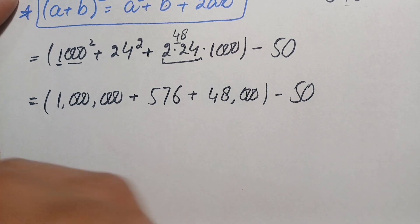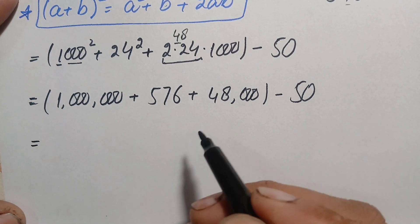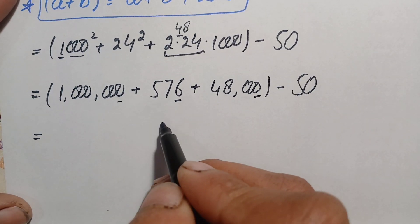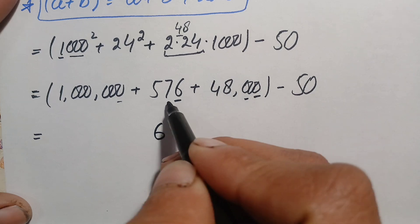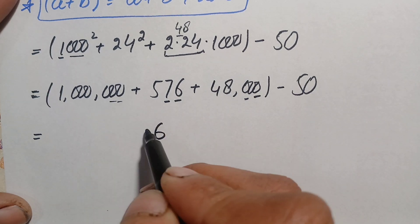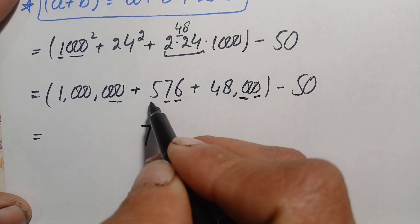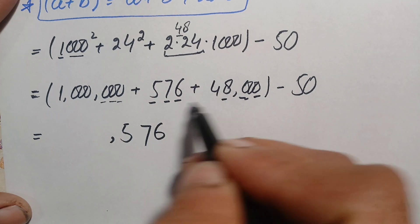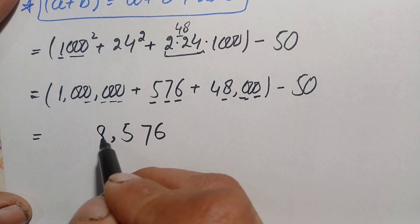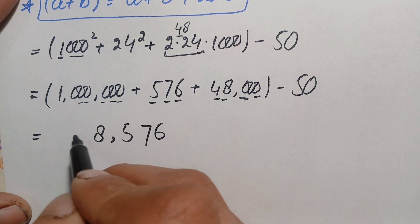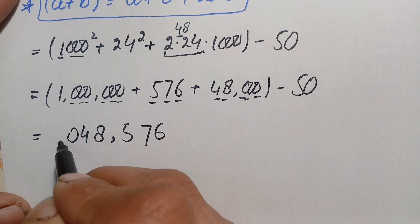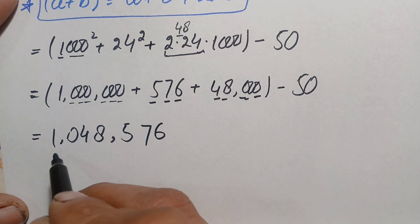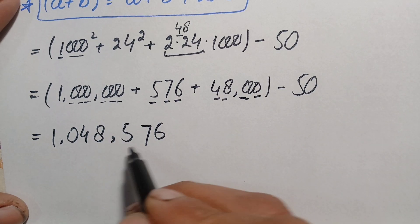We add the three numbers together, starting from the ones position. 0 plus 6 plus 0 is 6; 0 plus 7 plus 0 is 7; 0 plus 5 plus 0 is 5; 8 plus 0 is 8; 4 plus 4 is 4 — wait, 0 plus 4 is 4; then 0 and 1. The addition gives 1,048,576.